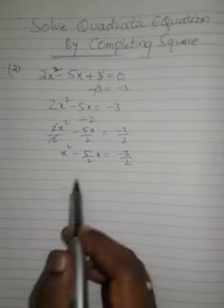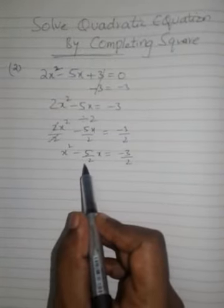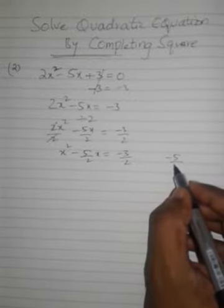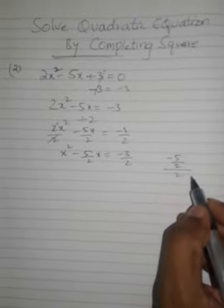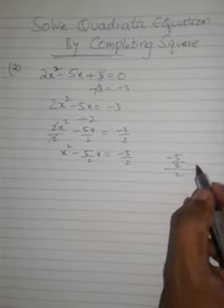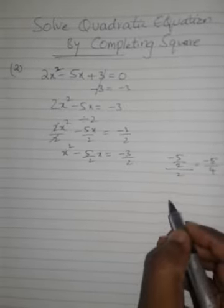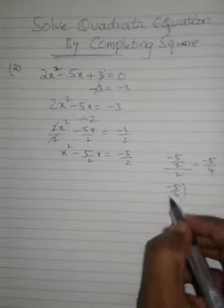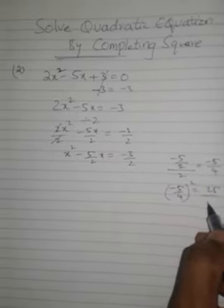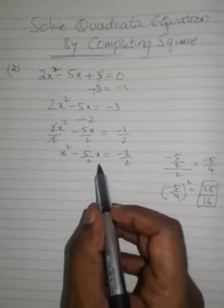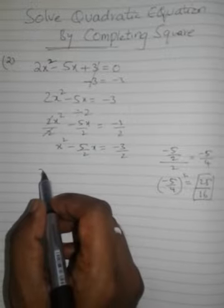Now we need to take half of the coefficient of x. The half of coefficient of x is, coefficient of x is 5 by 2 and half of it will be minus 5 by 2 and divided by 2 which is nothing but 5 by 4. We'll take the square of this which is nothing but 25 upon 16 and this number we are going to plug in over here and add to both sides of the equation.